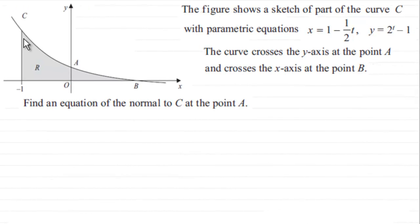Hi. Now what we've got here is this figure that shows part of this curve C with parametric equations x equals 1 minus a half t and y equals 2 to the power t minus 1. We're told that the curve crosses the y-axis at the point A and it crosses the x-axis at the point B. What we've got to do is find an equation of the normal to the curve C at the point A.